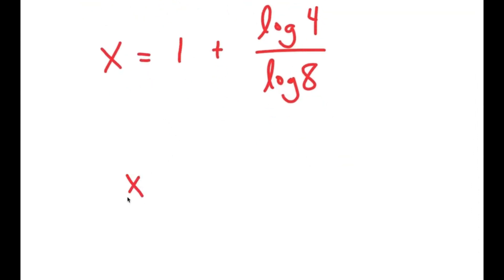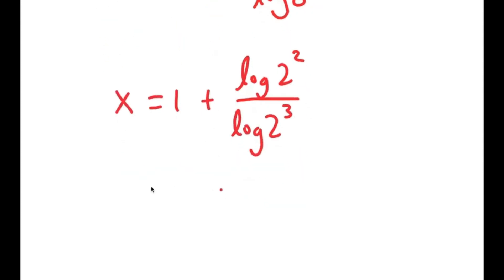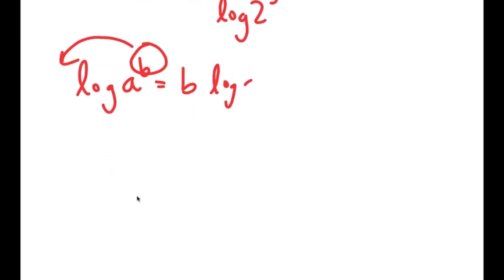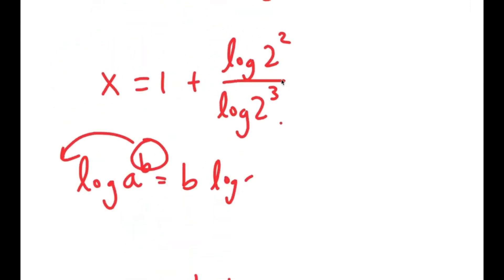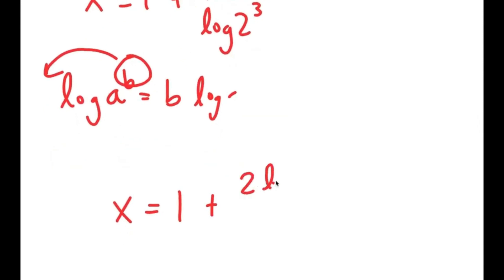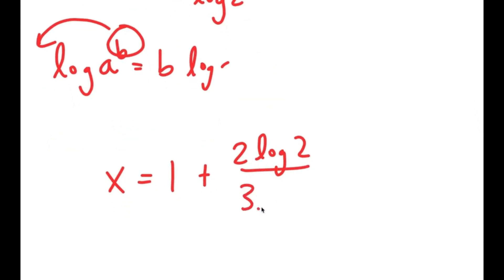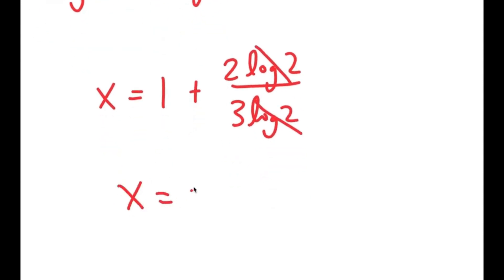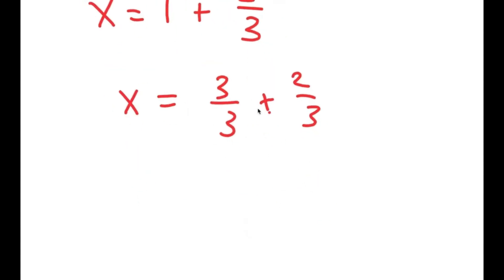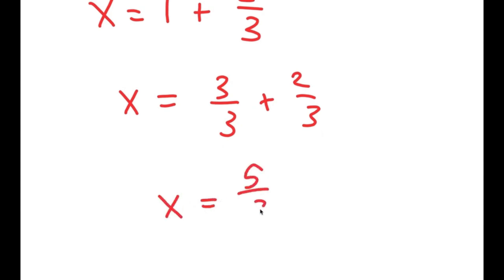Now log of 4 is the same thing as log of 2 to the power of 2, and log of 8 is log of 2 to the power of 3. If I have something in the form log of a to the power of b, I can move b to the front, so it becomes b times log a. So I get x equals 1 plus 2 times log 2 over 3 times log 2. These log 2 terms cancel out and I get x equals 1 plus 2 over 3, which equals 3 over 3 plus 2 over 3, which is 5 over 3. So x is 5 over 3.